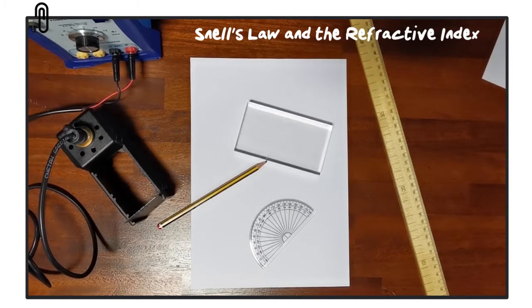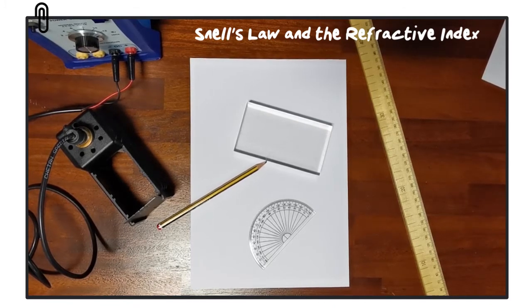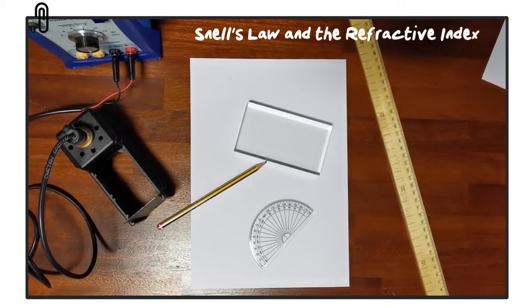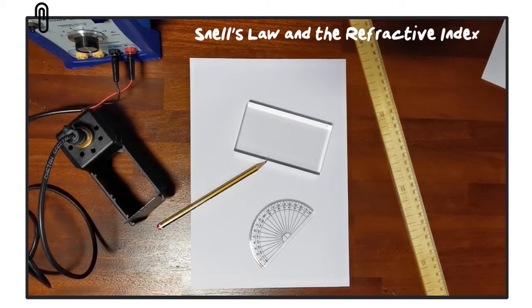In this video we're going to look at Snell's law, how we can verify Snell's law experimentally and determine the refractive index. Snell's law states that for light traveling from one medium to another, the ratio of the sine of the angle of incidence to the sine of the angle of refraction is equal to a constant.